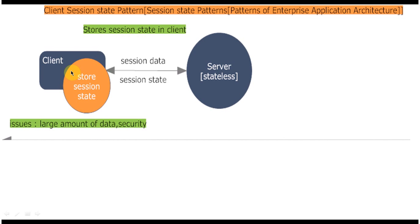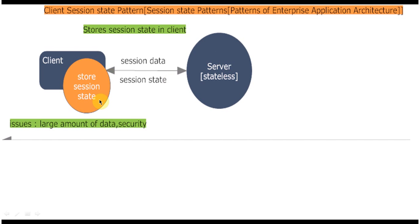We have two components: one is the client and another is the server. As per the client session state pattern, the session state is stored in the client. The client has to send session data to the server on each request. The server gets the session data, does some processing, and then returns the session state back to the client on each response. The client then stores the session state in the client machine.